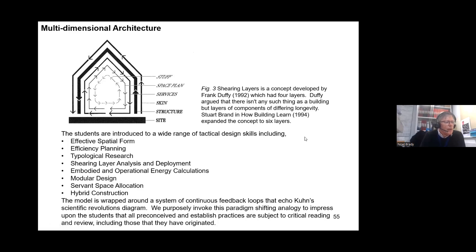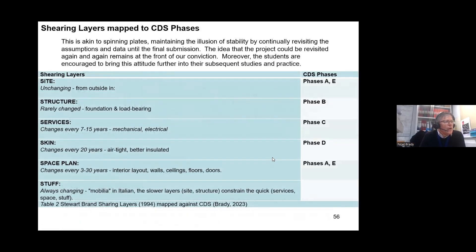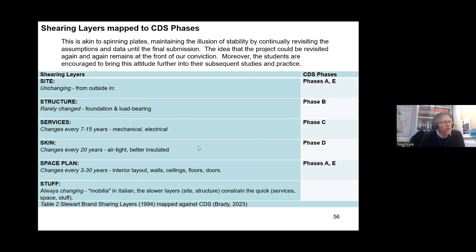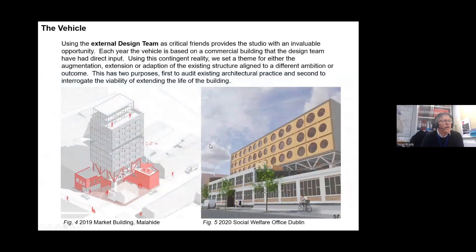This model is wrapped in a system of continuous feedback loops, which echoes Kuhn's scientific revolution diagram. The shearing layers are mapped in terms of the overall structure — the site obviously is unchanging, which has impact in phases A and E. As we move through structure, we have the foundation and load-bearing elements that remain pretty much static, but we expect students to design towards the idea of repair and renewal. This is quite unique among architecture schools — the idea that students will do a durability analysis with a repair and renewal strategy, including costing, and build that thinking into their design approaches.